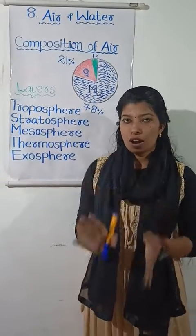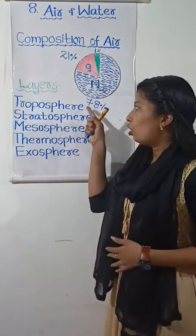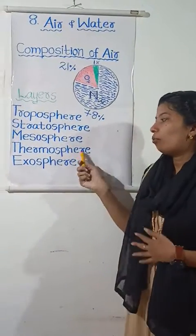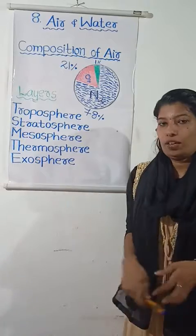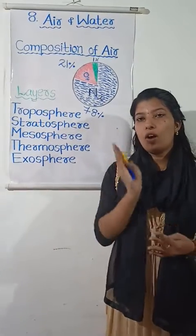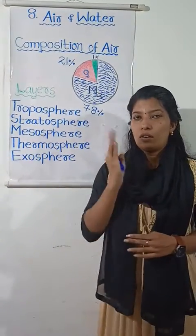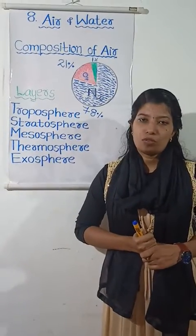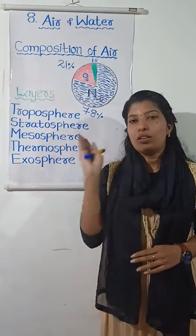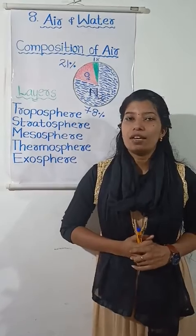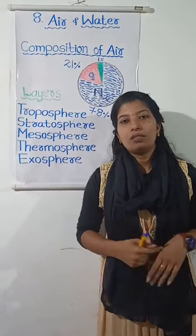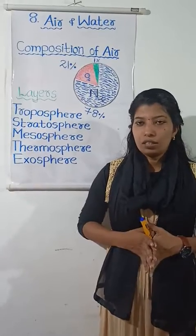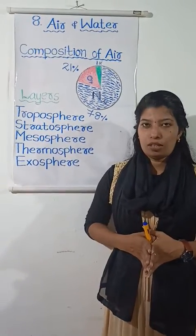So, the atmosphere has five layers. They are: troposphere, stratosphere, mesosphere, thermosphere, and exosphere. Students, I hope you are all clear about air composition and atmosphere, and that you enjoyed this session. We will meet in the next session and learn more about air and atmosphere. Till then, keep learning, keep enjoying. Thank you.